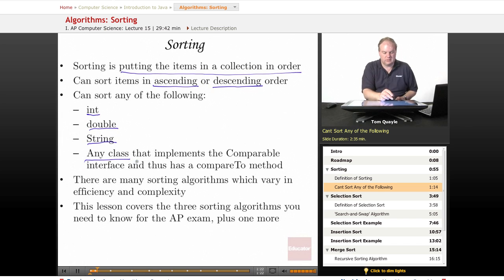You can sort any class that implements the Comparable interface. The Comparable interface has a method called compareTo, and compareTo results in a value being returned to the calling program that indicates whether one value is less than, greater than, or equal to a second value.